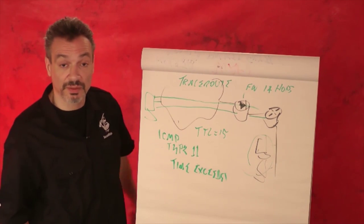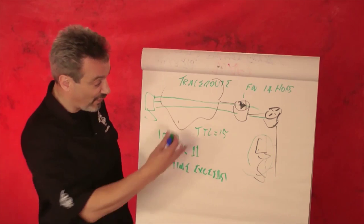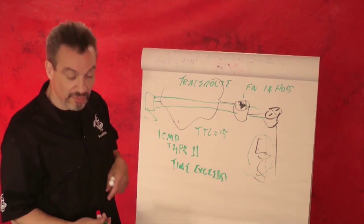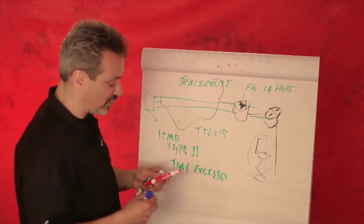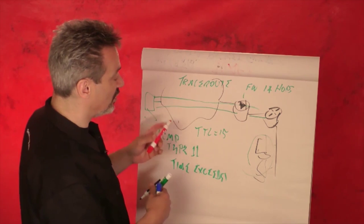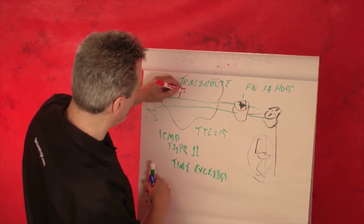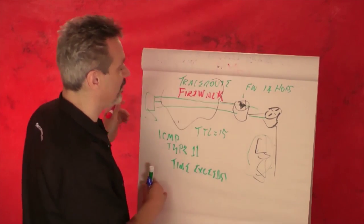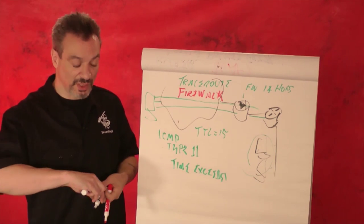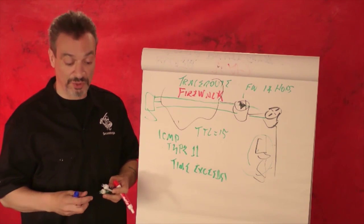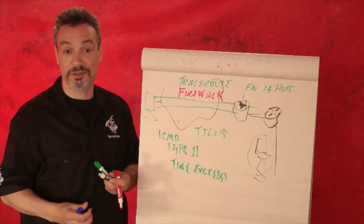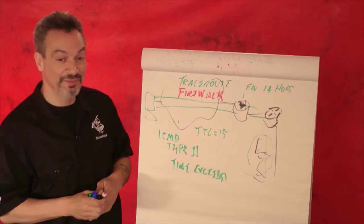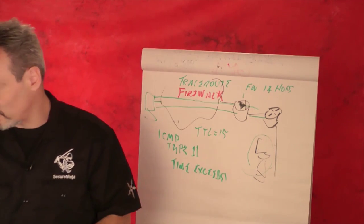Somebody's doing port 25 back there — why else would he have 25 open? If the firewall blocked it, I wouldn't get anything back. So there are ways to do this. The first tool I ever heard that could do this, and the one you'll need to know for your test, is called FireWalk. It's a very testable tool that works by what I call inference — it's not that it told you it was up, it's what it didn't tell you.